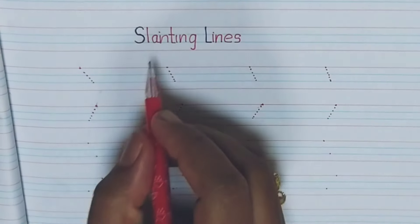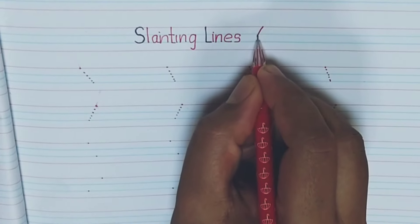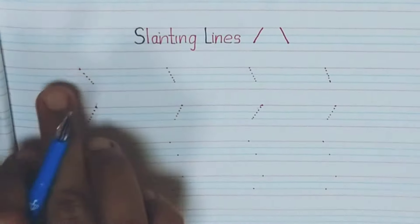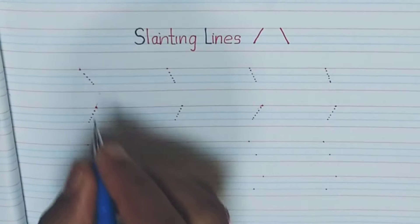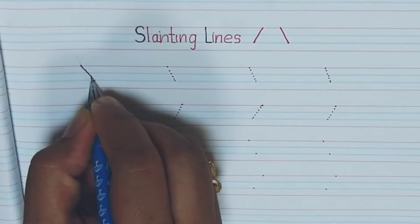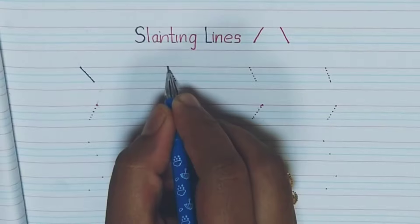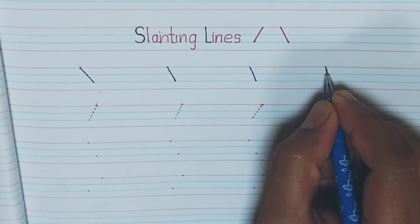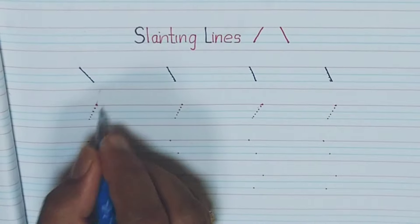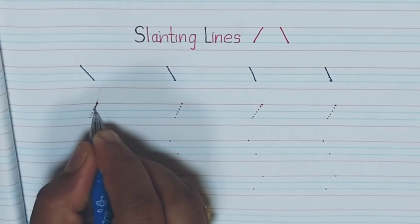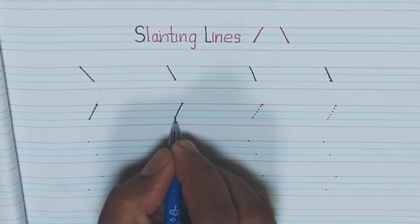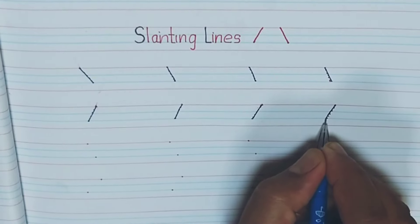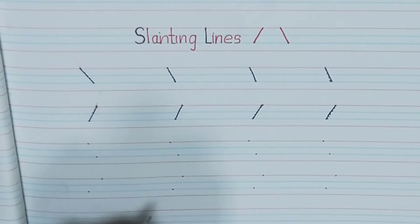Next one, slanting lines — left slanting and right slanting. We use only three lines, red to blue lines. First, trace the dot and draw a line to the right — it is a right slanting, with a small slope. Trace the dot from red line to blue line. Next, left slanting — trace the dot from red line to blue line to the left side. Then join two dots and practice like this.